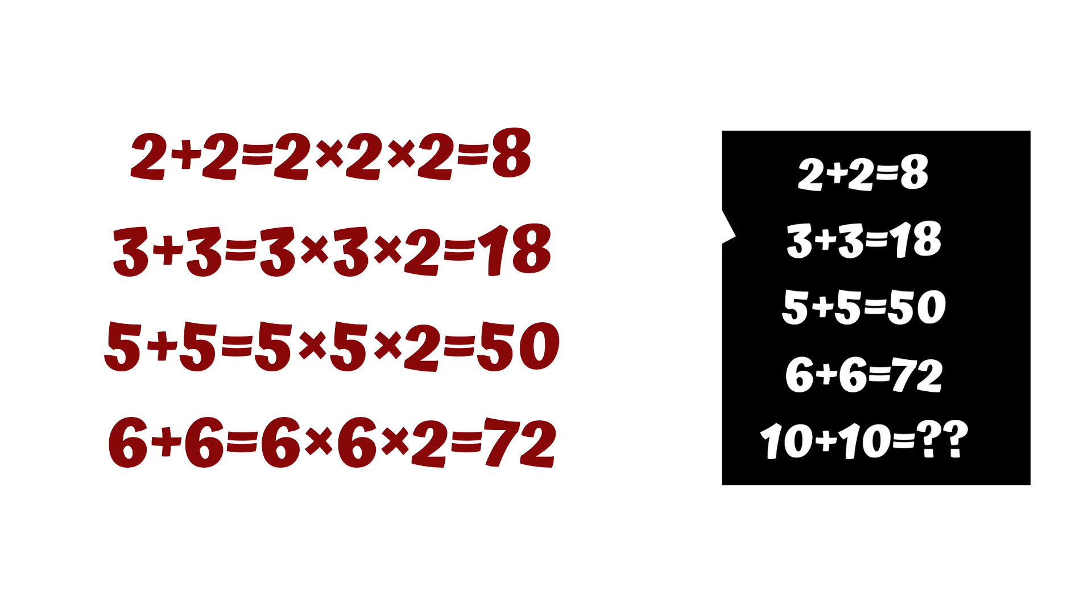Second row, 3 into 3 into 2, this is the value of 18. Third row value, 5 into 5 into 2, answer 50. Fourth row, solving answer 72.